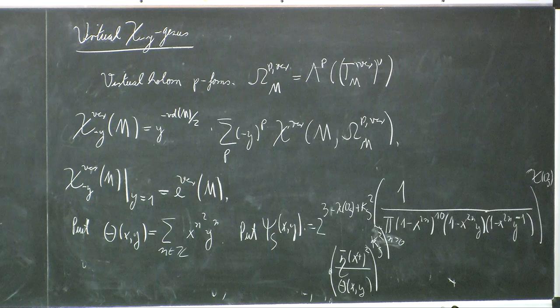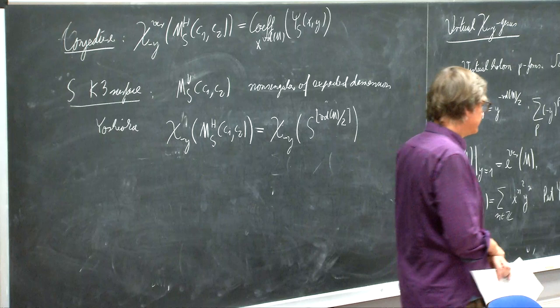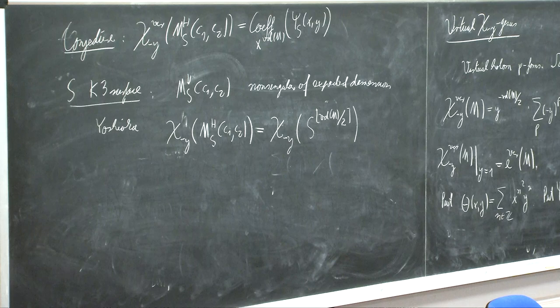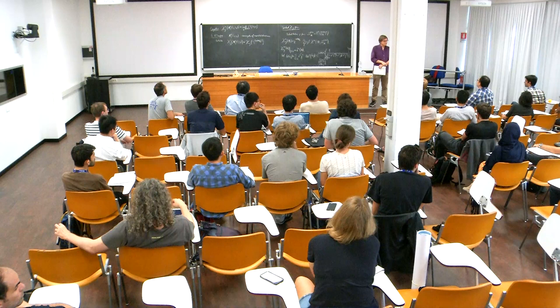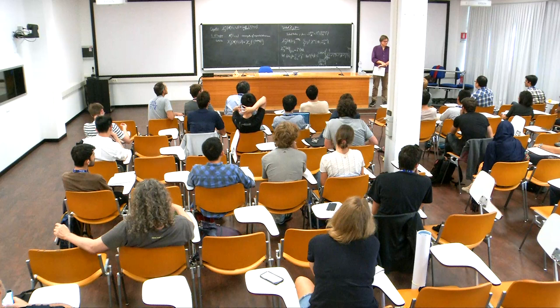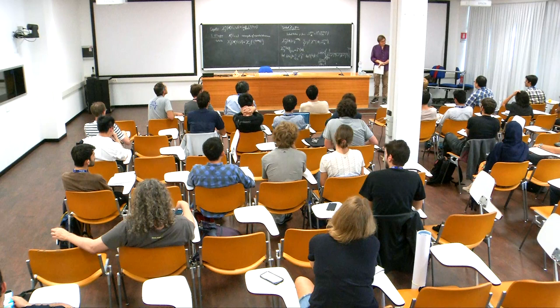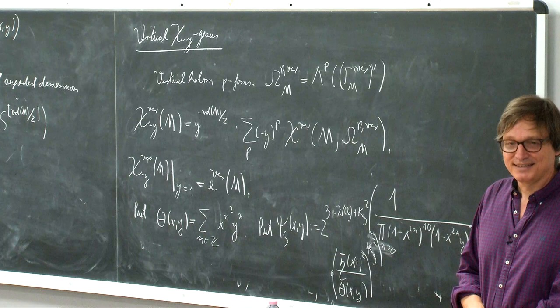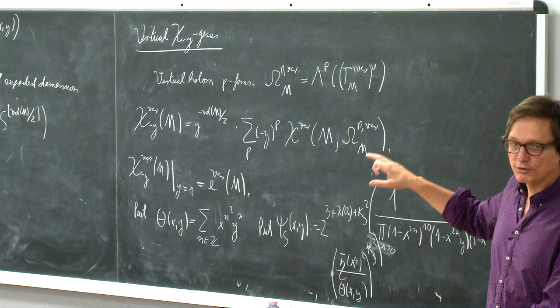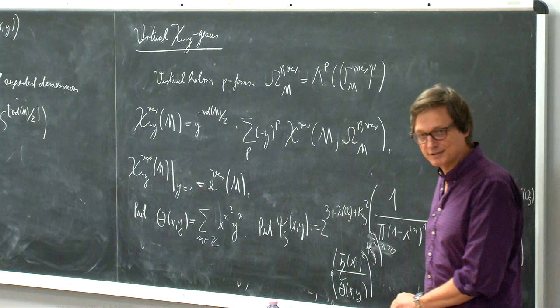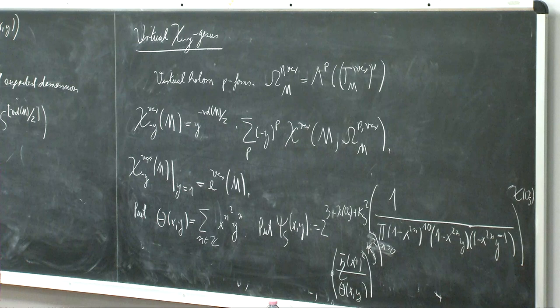In response to a question: you said this is the moduli space of rank 2 sheaves — if we increase the rank, do we have similar conjectures? Yes. We have worked it out in rank 3 and know what the statement is. There's a somewhat more complicated formula; there's some formula by physicists in arbitrary rank, but that contradicts our formula in rank 3, so as far as we are concerned there's a confirmed formula only up to rank 3.